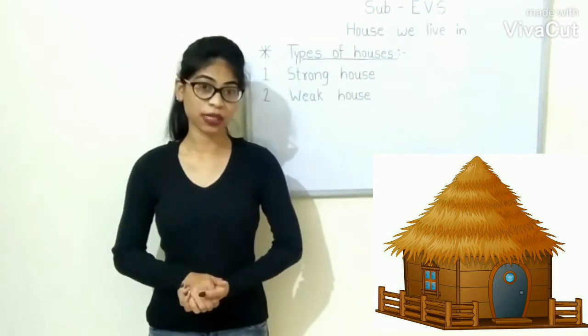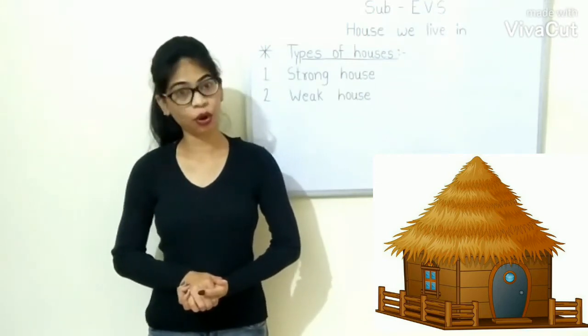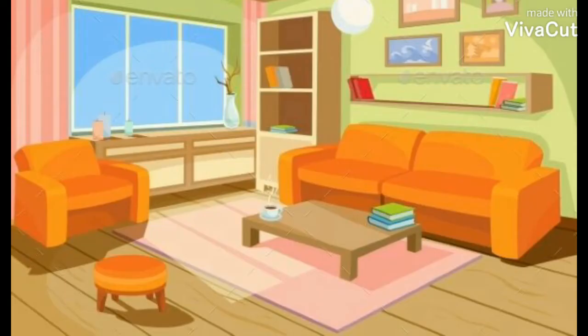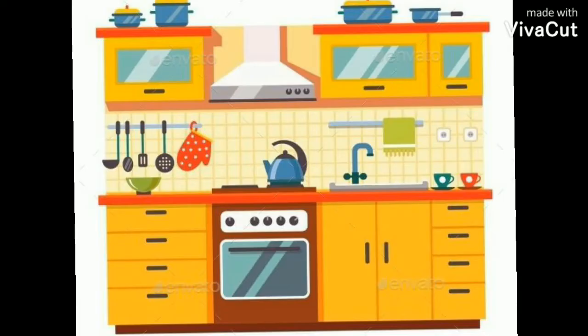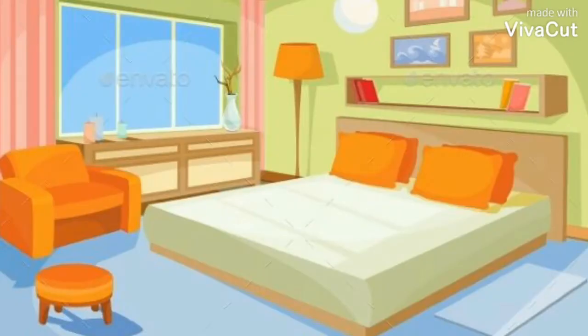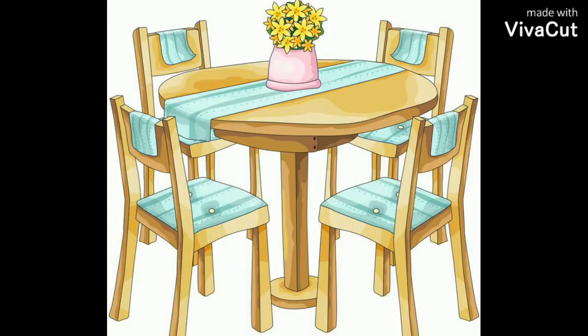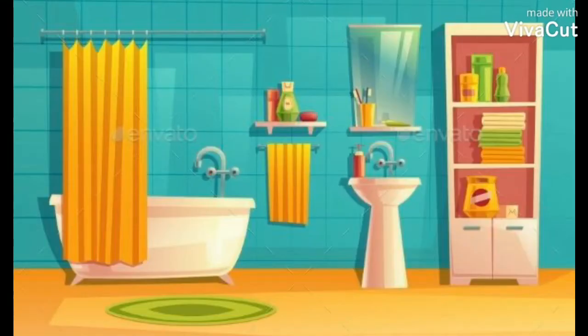Weak houses are made of mud and straw. A house can have many rooms. They are drawing room, kitchen, bedroom, dining room, and bathroom.